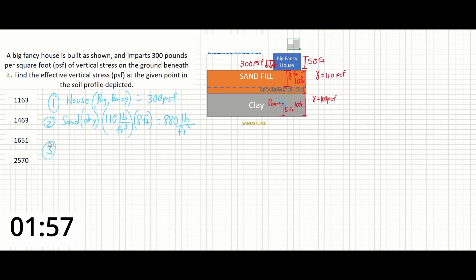Next, we can calculate the effective vertical stress in the saturated sand. If the total depth of the sand is 10 feet and the total dry depth is 8 feet, then the total saturated sand is 2 feet.